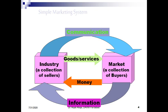This is a simple marketing system. There are sellers and buyers — the industry is the collection of sellers and the market is the collection of buyers. The industry produces goods and services for the buyers in the market, and in return they get money from the buyers. Communication is both ways: product and price related information is communicated from seller to buyer, and in the backward direction, information related to customer satisfaction, feedback, and grievances is passed back to the sellers. This is the simple marketing system.